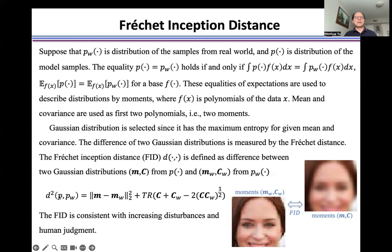Namely, the squared d is equal to squared mean difference between m and mw plus squared covariance difference between c and cw. For example, here we use FID to measure the similarity between two images. One is described by two moments, mw and cw. Another one is described by two moments, m and c.